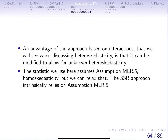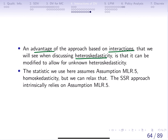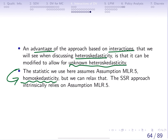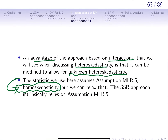The advantage of the interaction approach is that when discussing heteroscedasticity, we can modify these regression models to allow for any type of unknown heteroscedasticity appearing in the regression. Even though we assume homoscedasticity, we can always relax that, and we'll see that later.